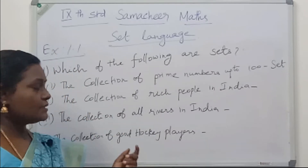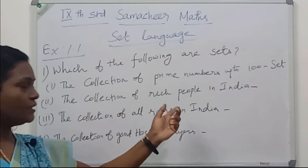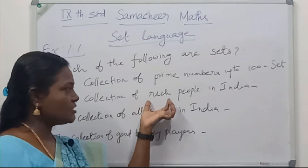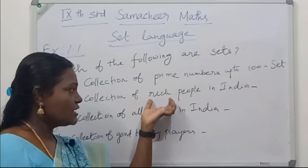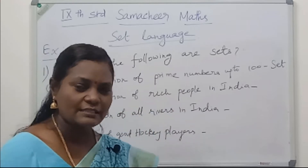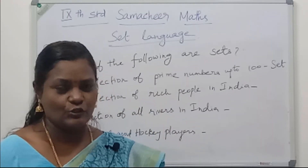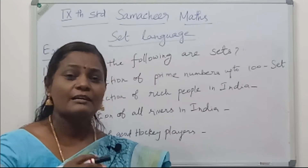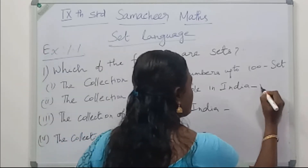See the 2nd question: the collection of rich people in India. See the word 'rich' here — it is not defined well. A person who is rich for you may not be rich for others. So it may vary person to person. That is why it is not a set.